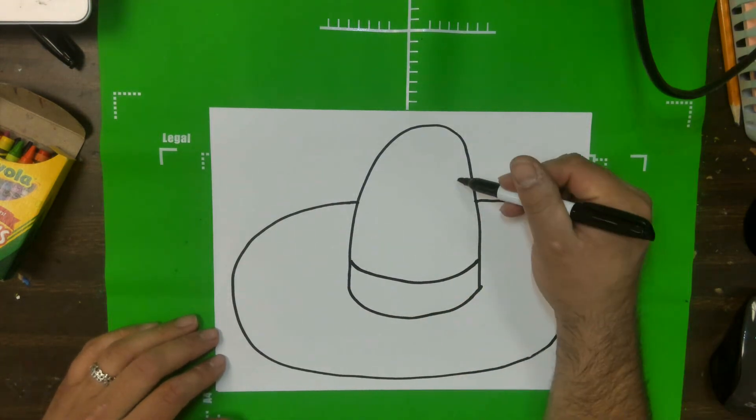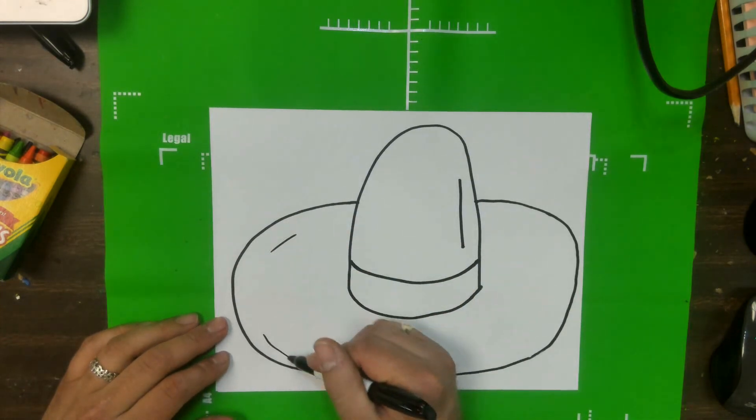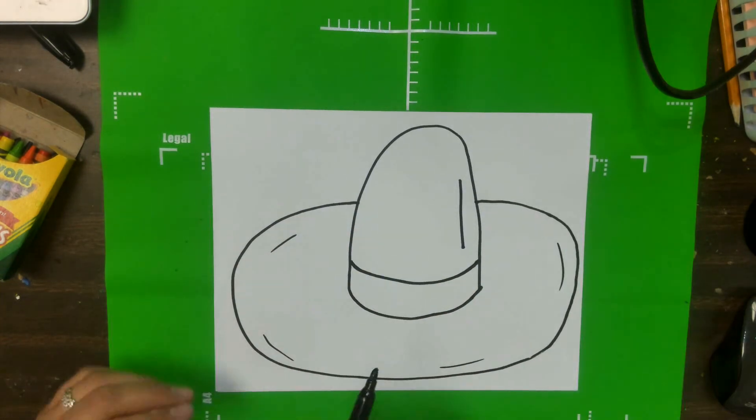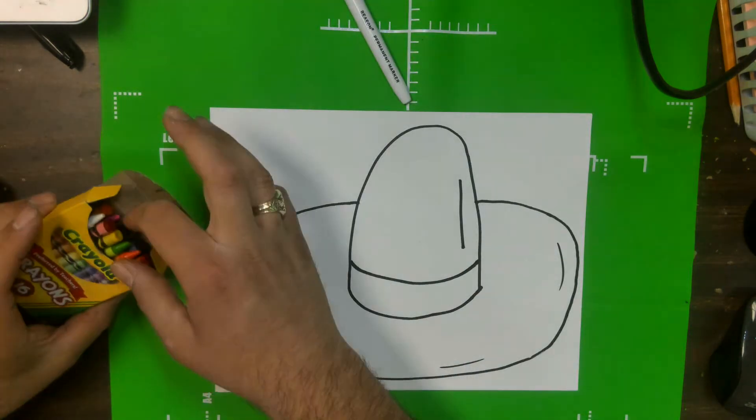And I like adding some emphasis lines, so one right there, maybe a couple around it like this, just like that. And there's the sombrero, pretty easy, right?